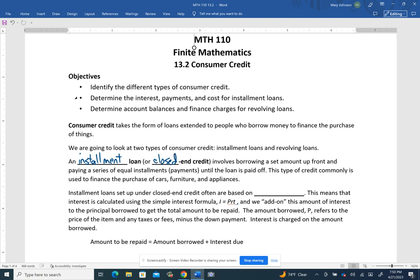That means we know how much we're borrowing because we're borrowing a set amount up front, and then we're going to just pay it off in equal installments, usually monthly until the loan is completely paid off. Cars, furniture, and appliances typically work this way.